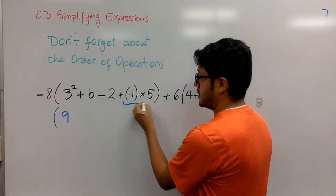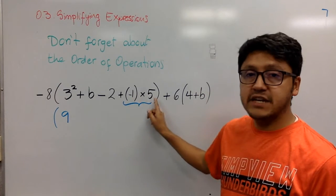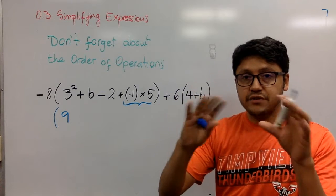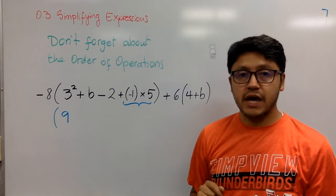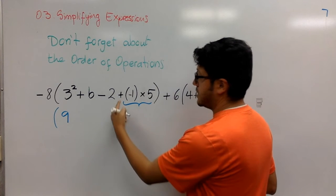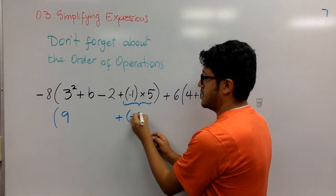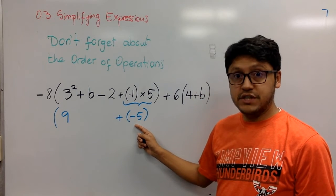So what are the two terms involved in that multiplication? 5 and negative 1, the ones that are on either side of the multiplication sign. So what is 5 multiplied by negative 1? It's negative 5. So you are going to be adding a negative 5. You see that?